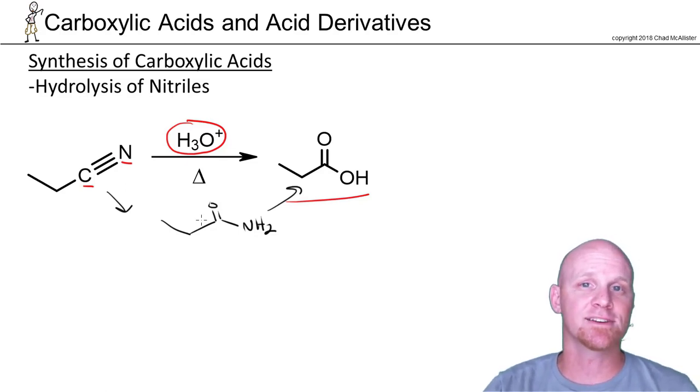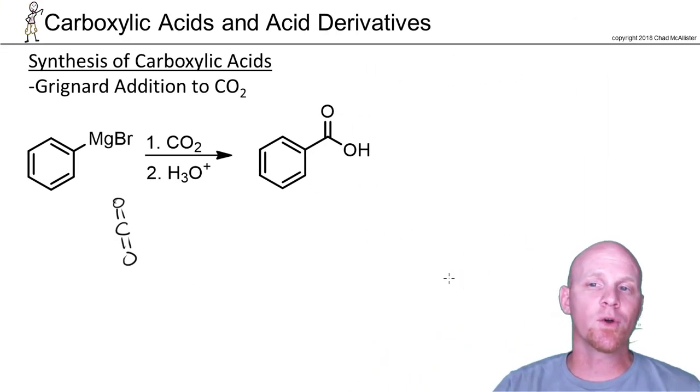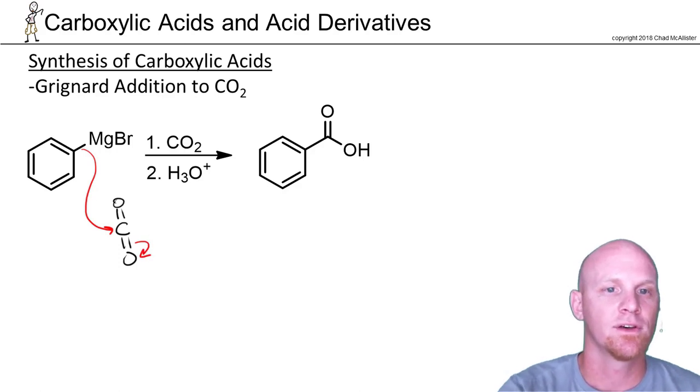Finally, the other new way to make a carboxylic acid is Grignard addition to carbon dioxide. We've seen Grignard addition to ketones and aldehydes, and in this chapter acid chlorides, anhydrides, and esters. But this one's very unique. In this case we're going to add it to a carbon-oxygen double bond, but of CO2. So we're going to come and attack the carbonyl, we'll kick these electrons out, and that's simply going to form a carboxylate.